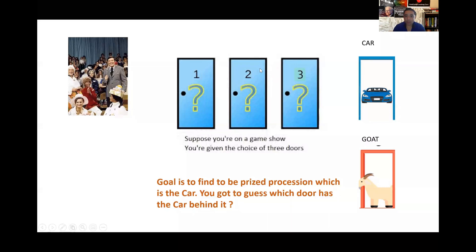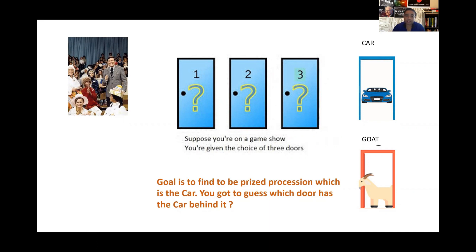So here is a game show. You are on the game show — you can see the participants there in the picture — and suppose Monty Hall comes to you and you are given a choice of three doors. There is a car behind one of those doors, which is your prize. You have to guess that door, and you get the car if you guess right. The other two doors have a goat behind them, which is something you might not want compared to a car.